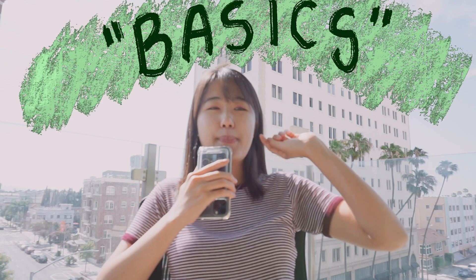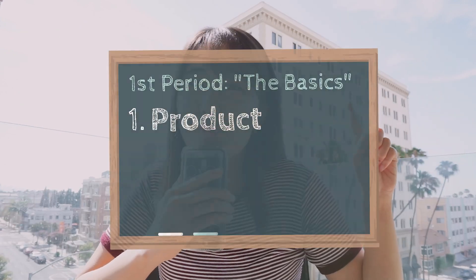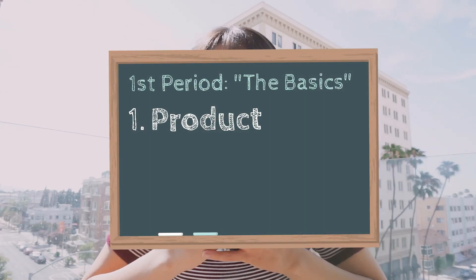First period is the basics, the super basic terms. First is product. This is probably the most elementary vocabulary. Product no longer refers to things that you would buy. It refers to any type of software, hardware, item, facility, or services that provide value to your customers.